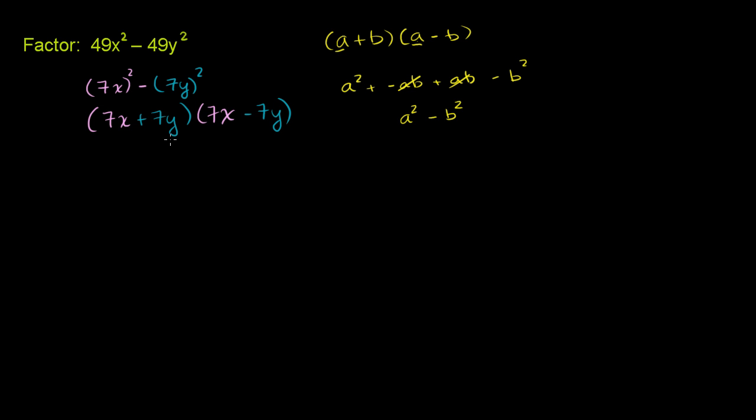Now, there's one alternate way that you could factor this. It would be completely legitimate. You could start from the beginning and say, you know what, 49 is a common factor here. So let me just factor that out. So you could say it's equivalent to 49 times x squared minus y squared.